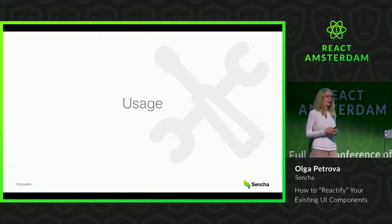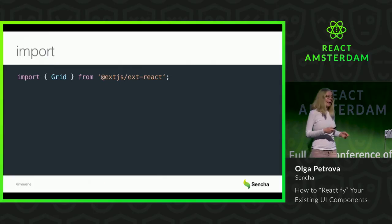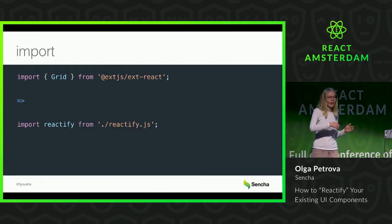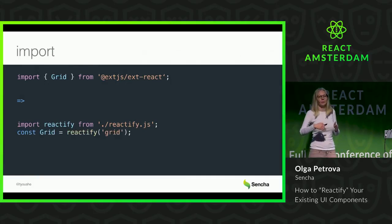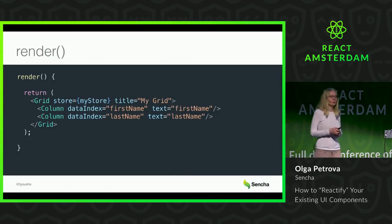How could you use your reactified components? First, you import any component — like Grid — from your package. For our case, the transpiler will transpile this one line of code into two lines: first we import the Reactify function, and then we reactify our Grid or any other component. After this, you just directly use Grid, or a Column component, directly in the render function.